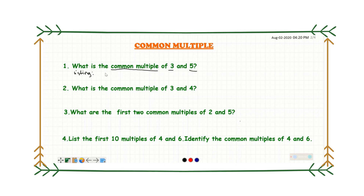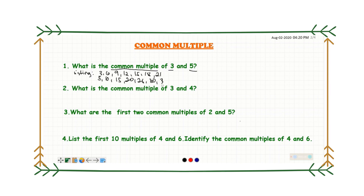Let's do the multiples of three first by skip counting: three, six, nine, twelve, fifteen, eighteen, twenty-one. That's the first seven multiples of three. Now let's do the first seven multiples of five by skip counting also: five, ten, fifteen, twenty, twenty-five, thirty, thirty-five.